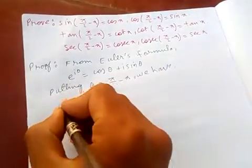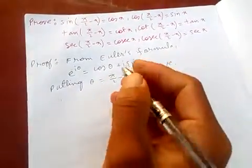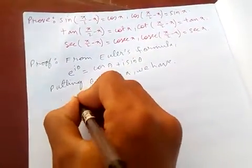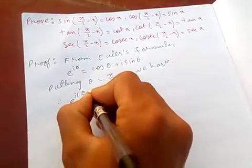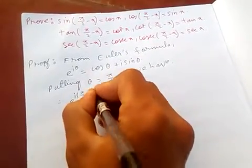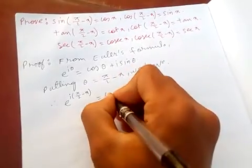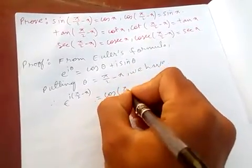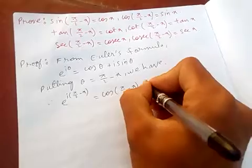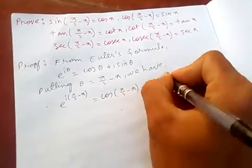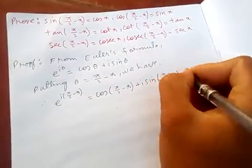So we have e^(i(π/2 - x)) is equal to cos(π/2 - x) plus i sin(π/2 - x).